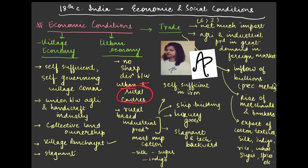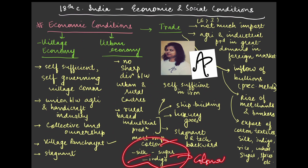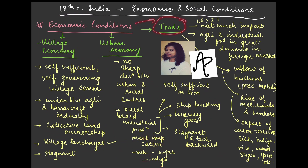Regarding urban economy: there was no sharp distinction between urban and rural centers. Rural-based industrial production happened in various forms — they were self-sufficient in iron production, which supported shipbuilding. Luxury goods were also produced. However, they were technologically backward and stagnant. The most important productions were cotton, silk, sugar, and indigo. These crops become very important again when we discuss the colonial period.